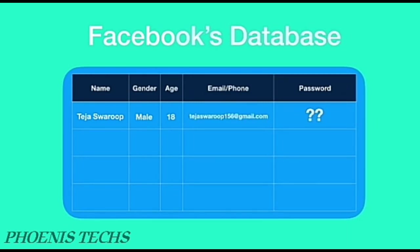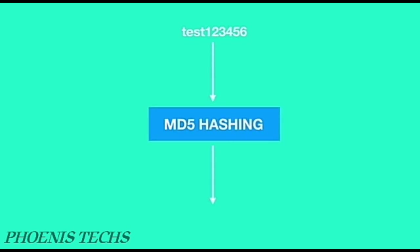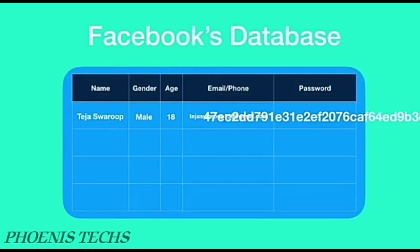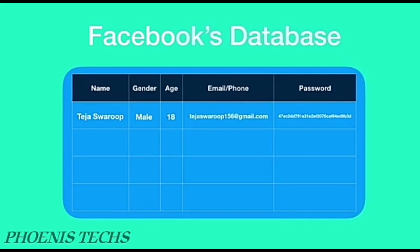But what about the password? A password will never be saved as plain text in a website's database. The password is given as input to a hashing algorithm and the output is the encrypted form of the password, which appears random but is not. This hashed password is saved in Facebook's database — not the plain text. Only the encrypted, or hashed, password is stored.